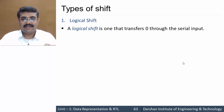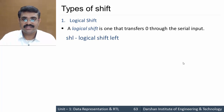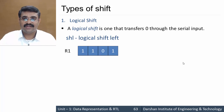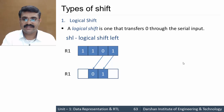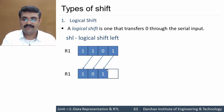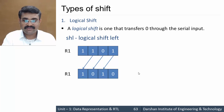The first type is logical shift, which transfers zero through the serial input. For logical shift left, consider register R1 containing 1101. The bits are shifted to the left by one position. The MSB is discarded, and a zero is transferred through the serial input at the LSB position. So the result is 1010 with a zero filled in at the LSB.